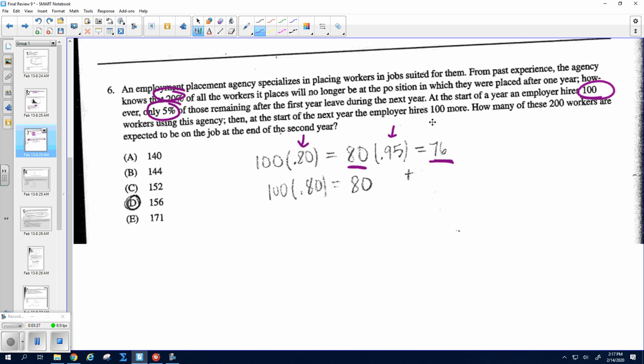But the second year, they hired 100 more people, and we only keep 80% of those, because it's still the first year for those people. So we kept 80% of that group, and then we've got to add these two numbers together to get D, 156.